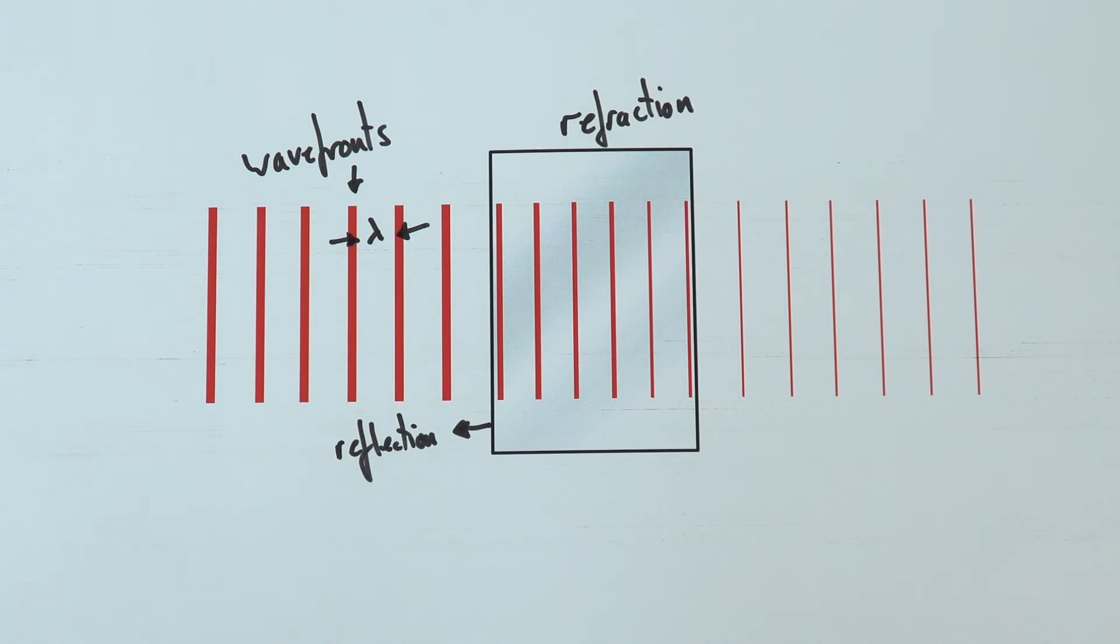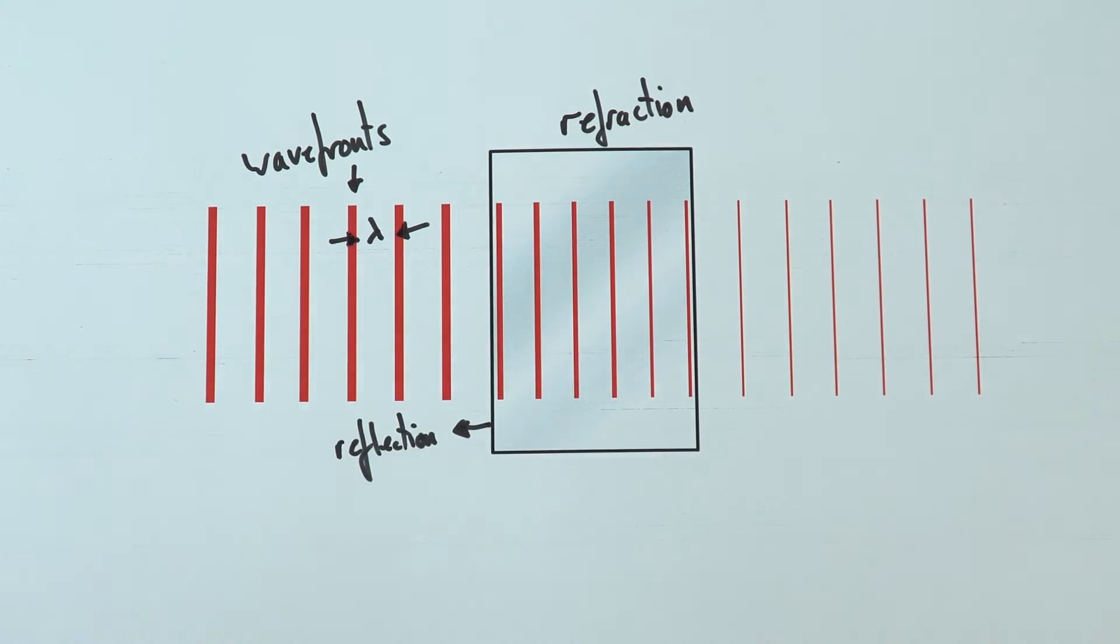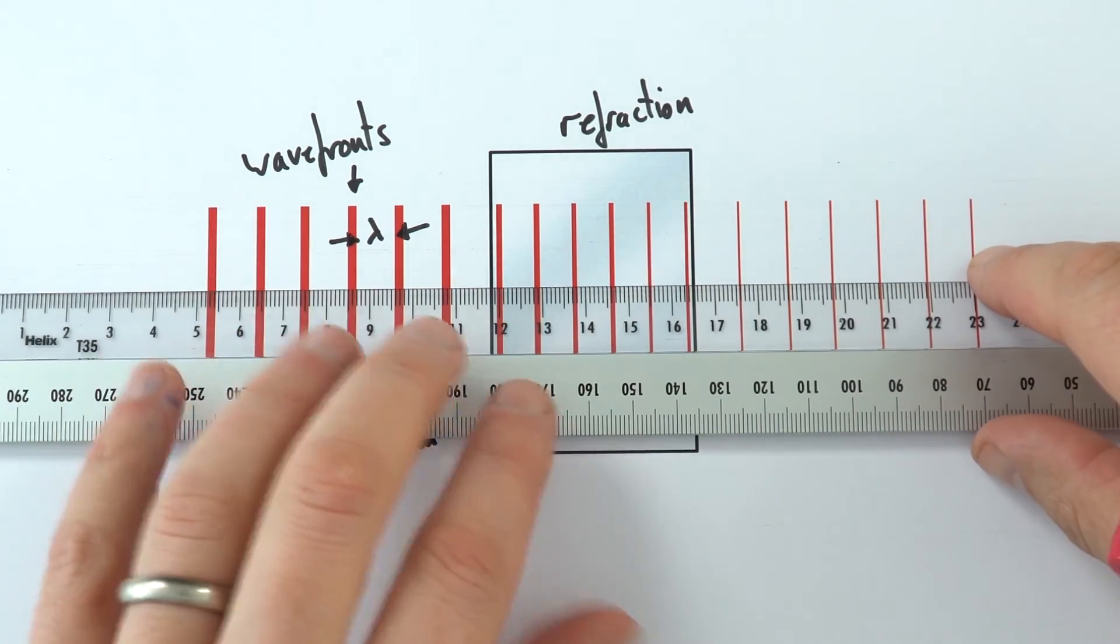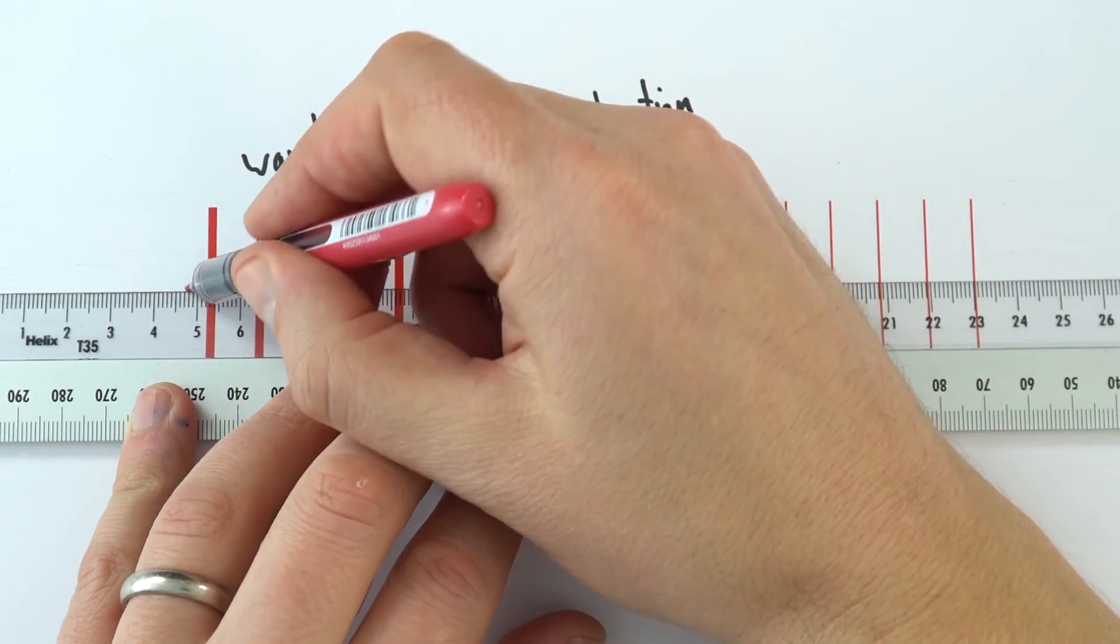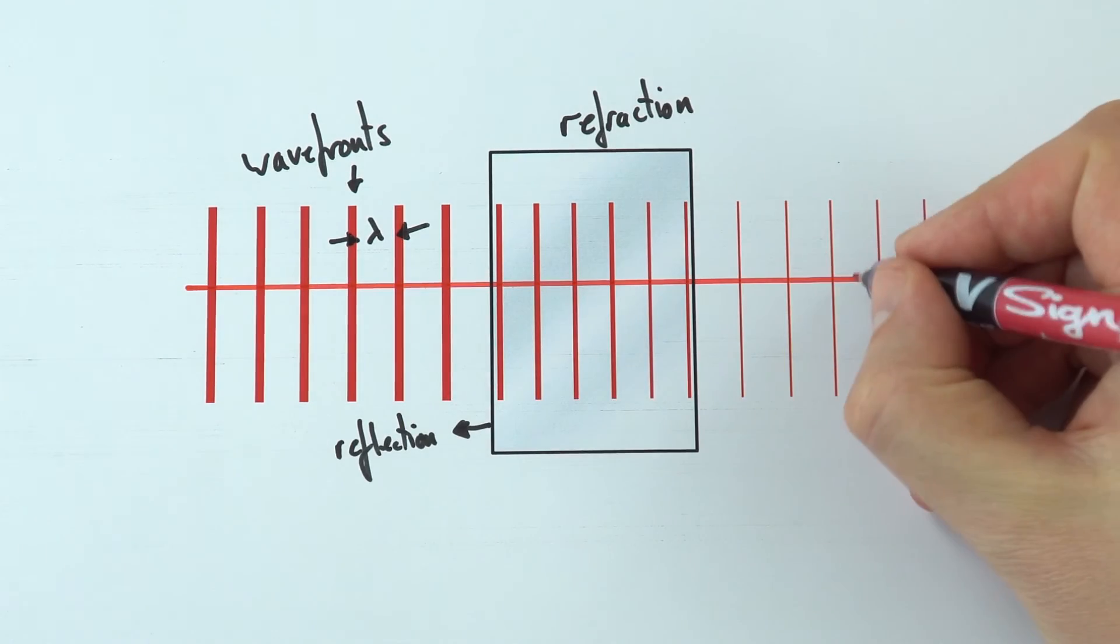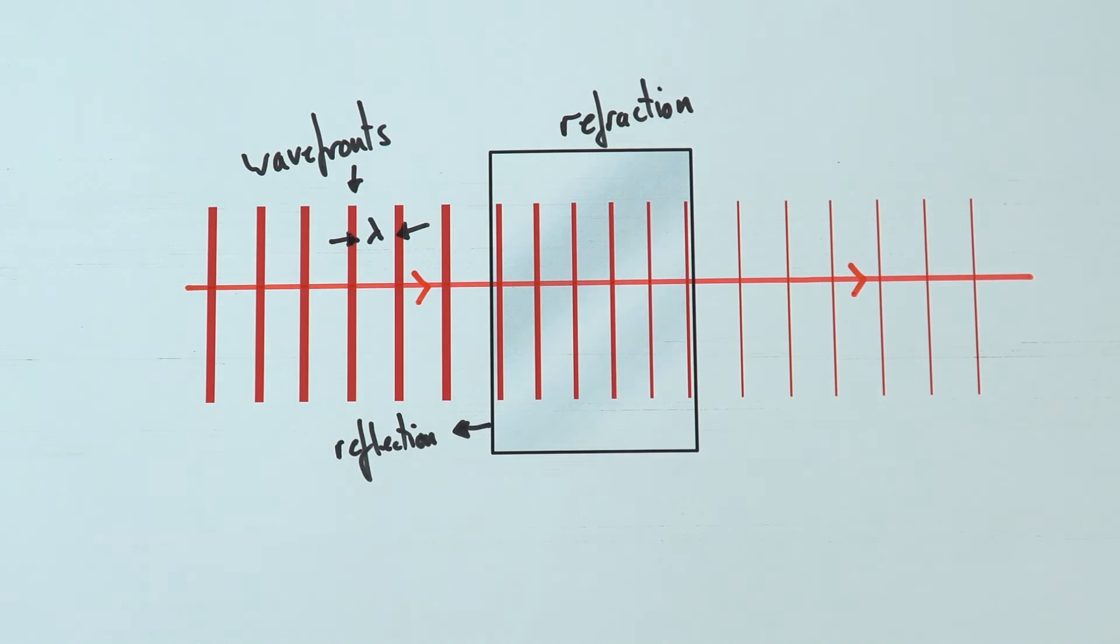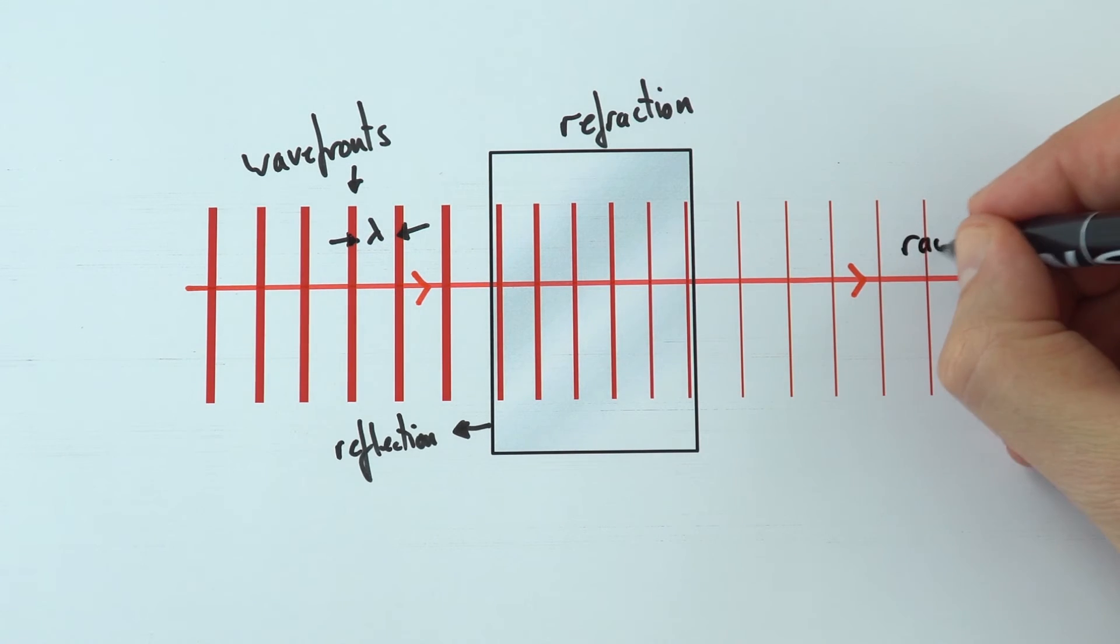And a final thing about this diagram. This is showing the wave fronts as they move through a medium. But sometimes what's more useful is if we actually draw a ray to show the direction that that wave has travelled. So this thing down here, I'm just going to put a couple of arrows on to show which way that's moving. This is our ray.